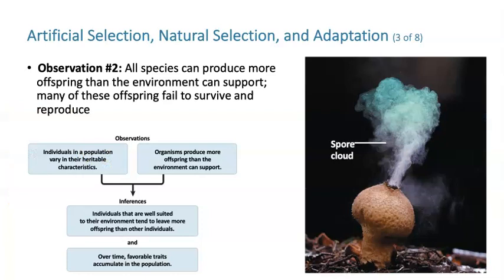He also observed that all species — and this is literally true for all species — produce more offspring than the environment can support, and a lot of these offspring do not survive and reproduce. Those two big observations allowed Darwin to come up with his first inference.